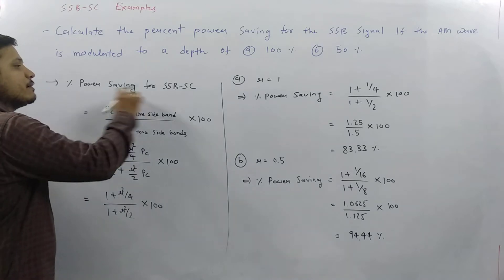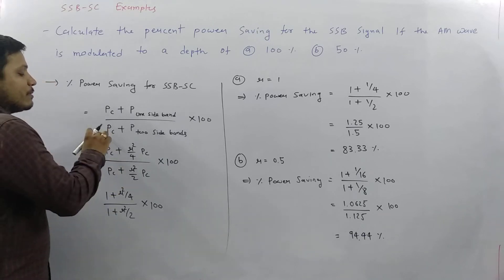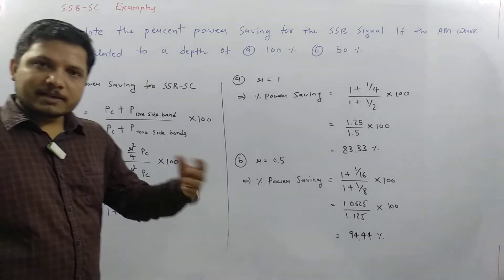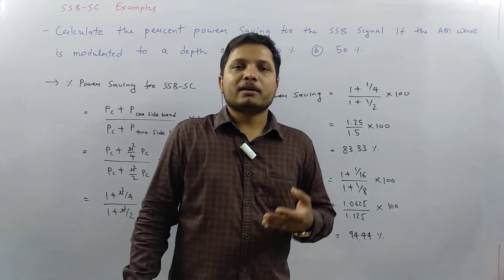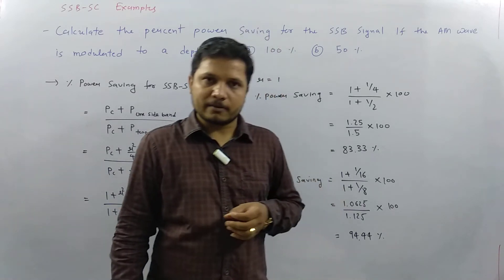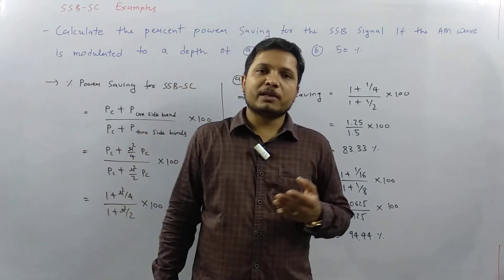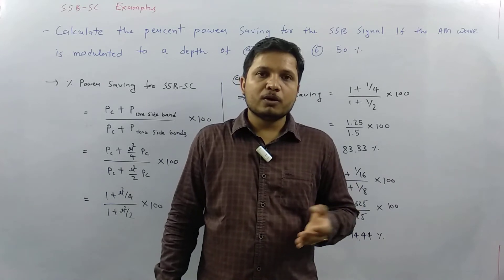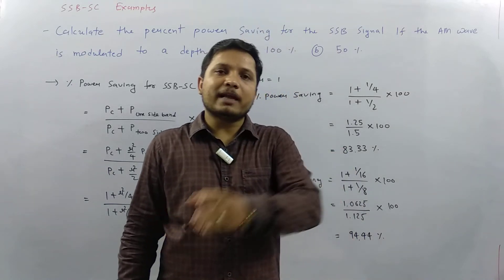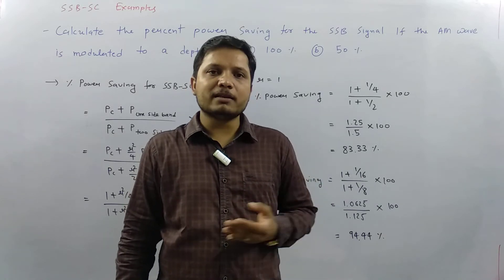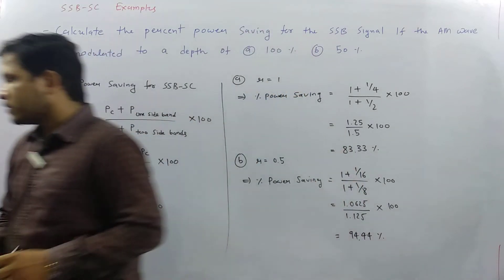So percentage power saving for SSBSC equals power of carrier plus power of one sideband, divided by power of carrier plus power of two sidebands. Alternatively, we can calculate power of one sideband as mu-squared by 4 times PC, and total AM power as PC plus PC times mu-squared by 2. Then 100% minus the percentage of power forwarded gives the percentage power saving. There are multiple ways to solve this problem.